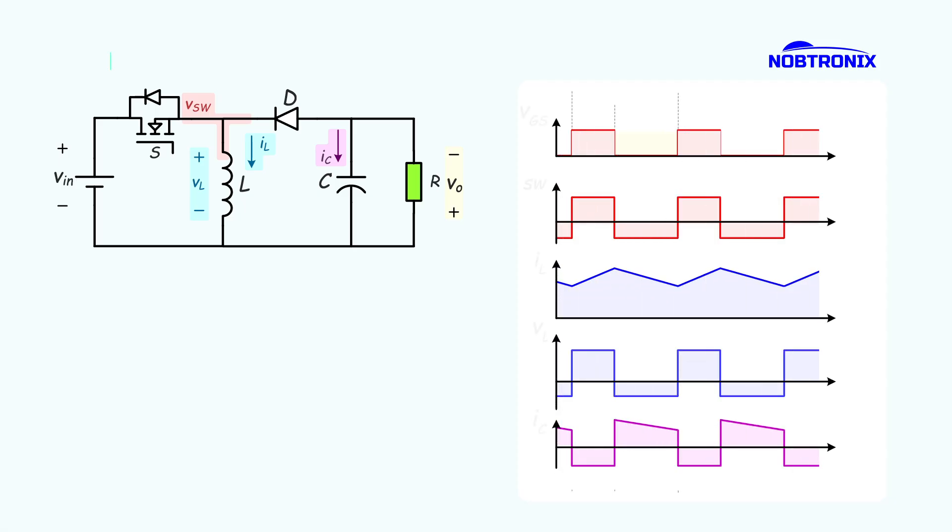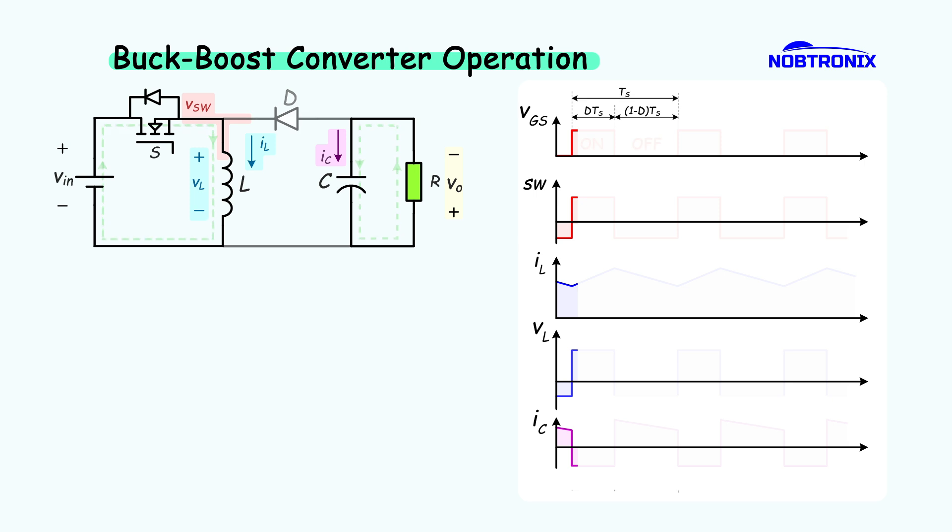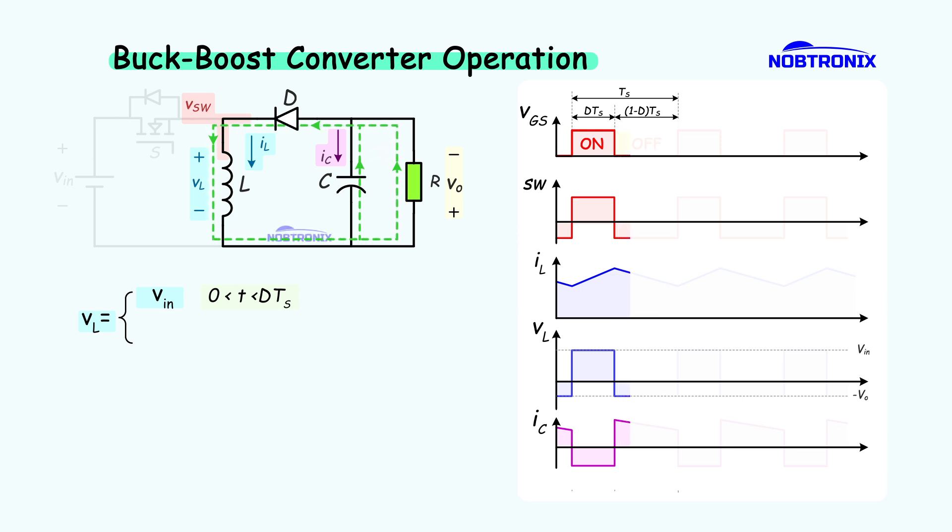Let's look at how this new topology works. When the switch is on for DTS, the inductor connects to the source and starts storing energy. The diode is reverse biased, so the load gets its energy from the capacitor, which starts to discharge. When the switch turns off, the inductor charges the capacitor, but because of the capacitor direction, the capacitor's voltage polarity flips too. So we need to reverse the capacitor's orientation.